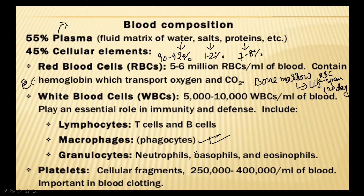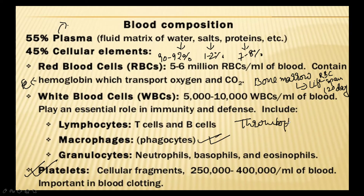WBCs also help in the formation of antibodies, which neutralize or kill the germs that enter our body. Platelets are found floating in the blood and are enucleated — meaning they have no nucleus. They are bound by a membrane containing few cell organelles and are responsible for the clotting of blood. A chemical called thromboplastin is present in platelets, which is responsible for blood clotting. Platelets are also called thrombocytes.